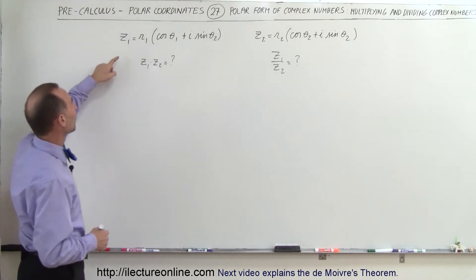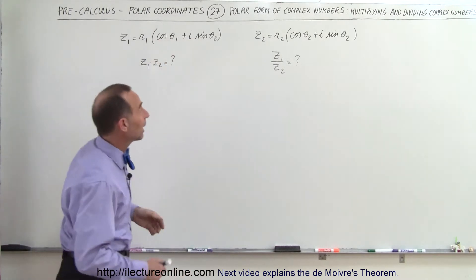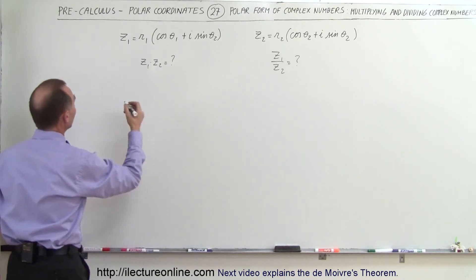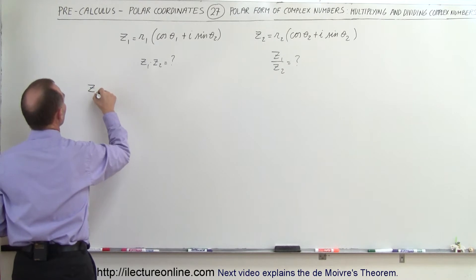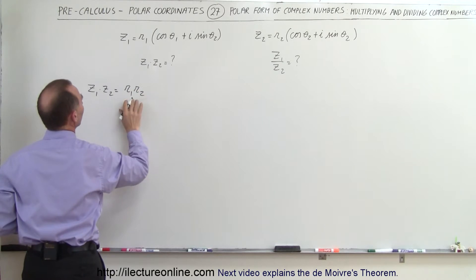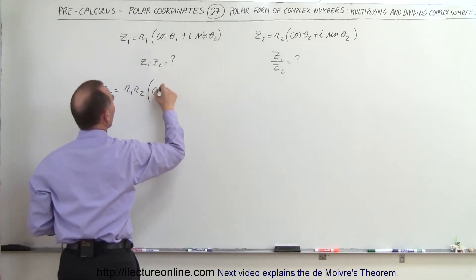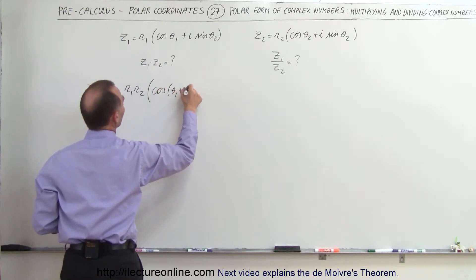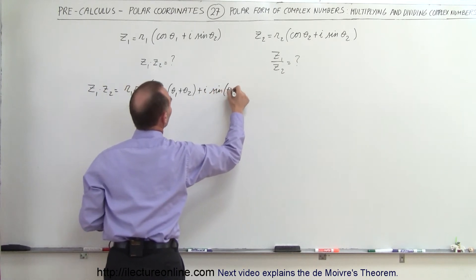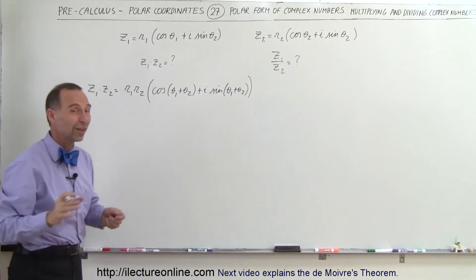Let's say we have two complex numbers, Z1 and Z2, already converted into polar form. When we multiply the two together, Z1 times Z2 is equal to R1 times R2 — simply the multiplication of the two magnitudes — times the cosine of the sum of the two angles, plus i times the sine of the sum of the two angles. So you can see that it's really easy to multiply two complex numbers that are in polar form.